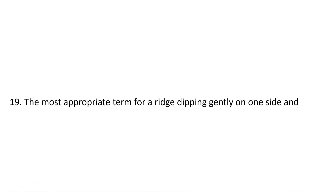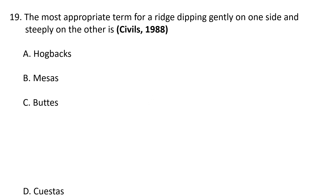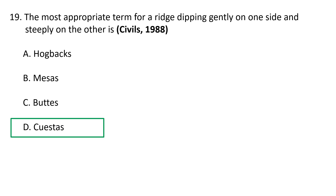Next question: The most appropriate term for a ridge dipping gently on one side and steeply on the other — A) hogback, B) mesa, C) butte, D) cuesta. Buttes are isolated masses without flat tops. Mesas are flat-topped hills formed by fluvial erosion. Hogback is an erosion ridge with a long gentle slope on one side and a steep slope on the other. The correct answer is D, cuesta.